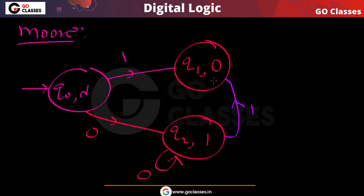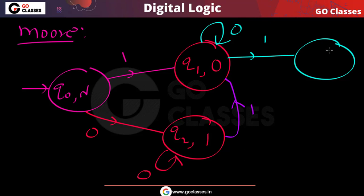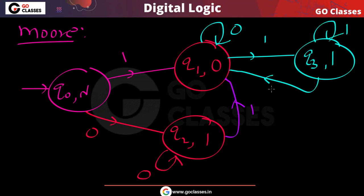You can correct the mistake very simply. In that final state, if 0 comes you print 0, and if 1 comes you print 1. This is how you create a Moore machine for decrementing a number by 1. In the last lecture we saw how to increment a binary number by 1; in this video we have seen decrementing a binary number by 1.